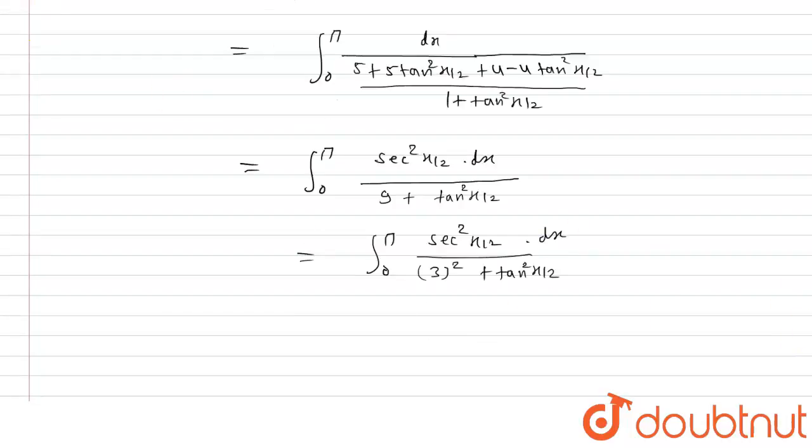Now put tan x by 2 is equals to t and differentiate it with respect to x. So differentiation of tan x by 2 is sec square x by 2 and multiply by 1 by 2 dot dx.